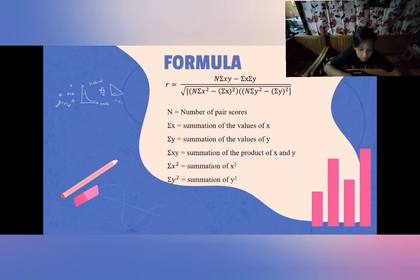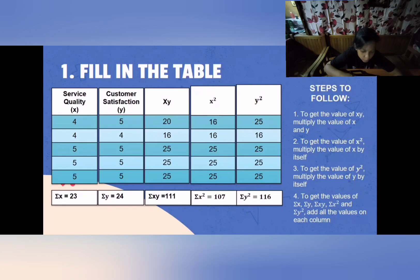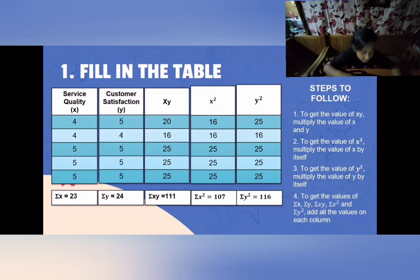This is the formula used for Pearson R. Let's try an example using service quality and customer satisfaction. Service quality will be the value of x and customer satisfaction will be the value of y. There are just four steps to solve the value of Pearson R. The first step is to fill in the table. We have the values for x and y, and we will look for the values of x squared, y squared, and xy. To get the value of xy, multiply the value of x by y.